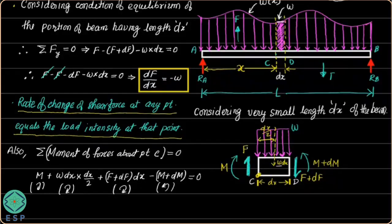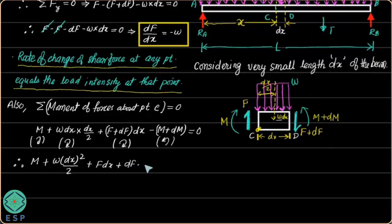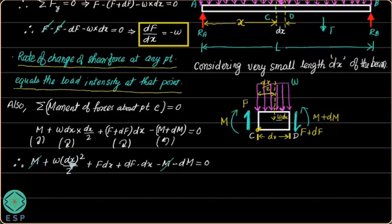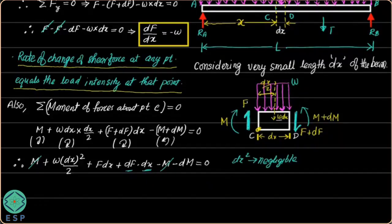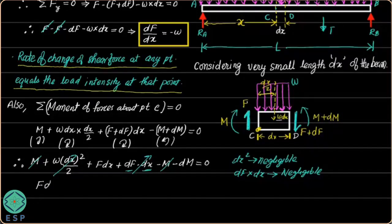Simplifying this equation: M + W·dx²/2 + F·dx + dF·dx − M − dM = 0. Here M and −M cancel. The term W·dx²/2 contains dx² which is negligibly small, so it is neglected. Similarly, dF·dx is a product of two small quantities and is also negligible. The remaining terms give: F·dx − dM = 0.